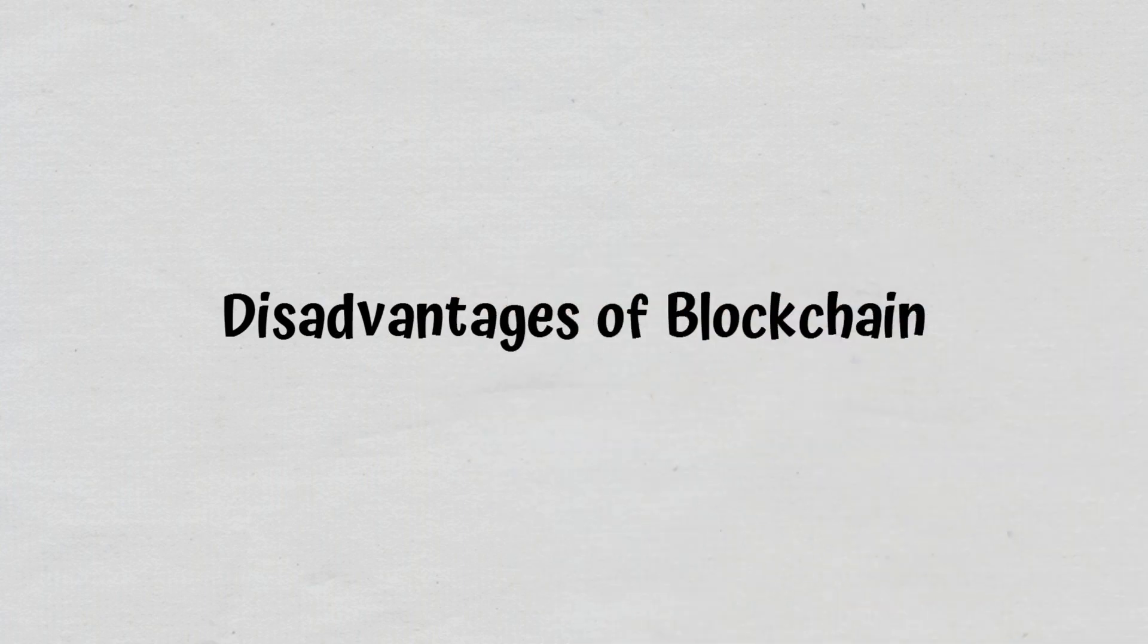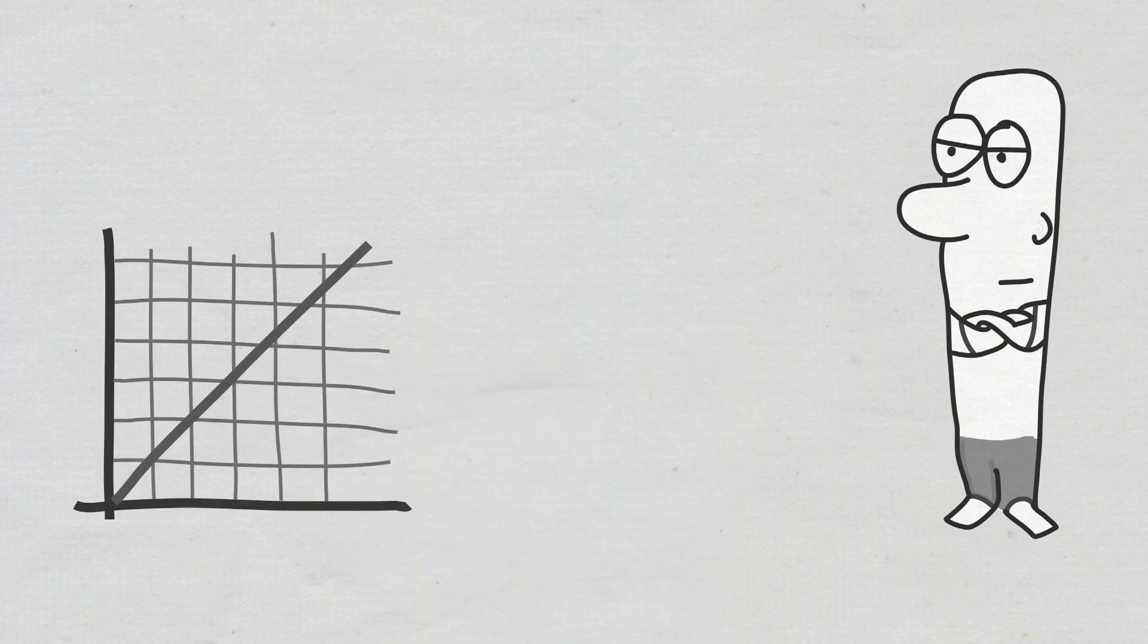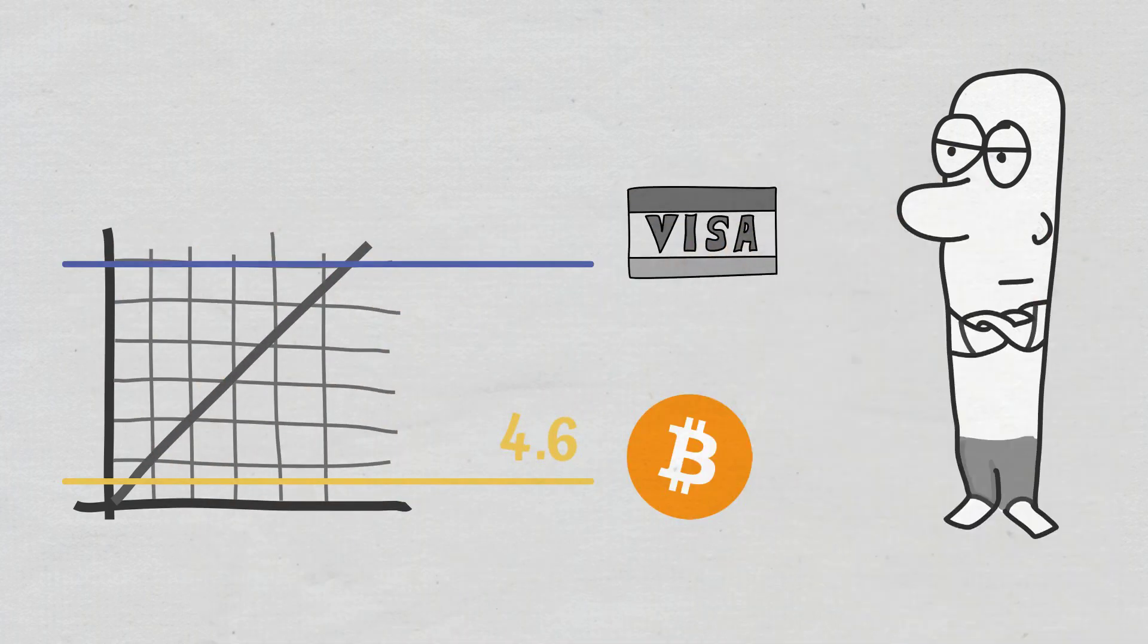Disadvantages of blockchain. Blockchain does have its downsides as well, such as a limit for transactions per second. As an example, Bitcoin processes 4.6 transactions per second, while Visa processes 1,700 in the same amount of time. This means that scalability in blockchain can be a problem.